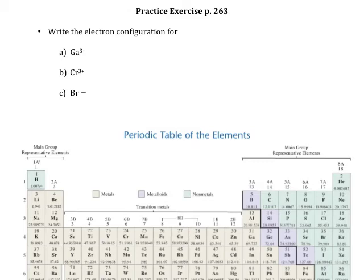This is a practice exercise from page 263 in the book. They have us writing electron configurations for ions. Now when I write an electron configuration for an ion, I like to start by writing the electron configuration for the neutral element. So let's look at the first one.